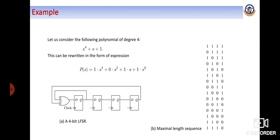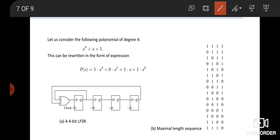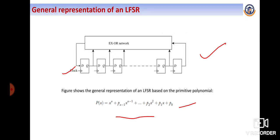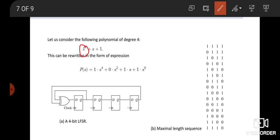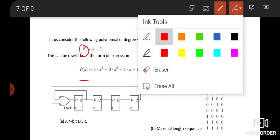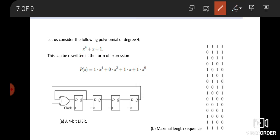Let's discuss one example for the LFSR concept. Consider the following polynomial of degree 4: X^4 + X + 1. This can be rewritten in the form of the polynomial equation as P(X) = 1·X^4. So the given equation is X^4 + X + 1. This is the polynomial representation of degree 4.